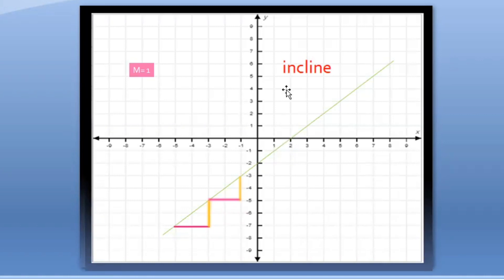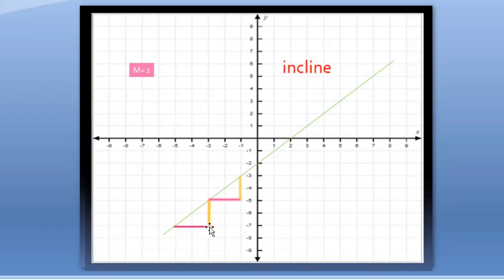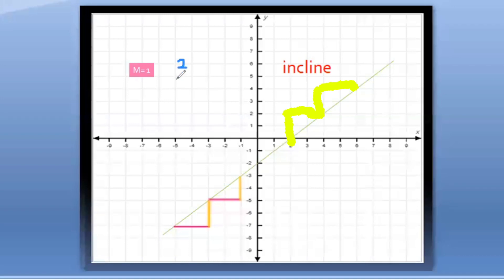Look at this graph. This line is increasing from left to right and is inclined. As x is increasing, y is getting increased. Here you can see as x is increasing by 2, y is increasing by 2. So our slope is 1.